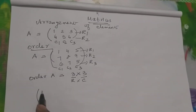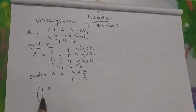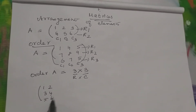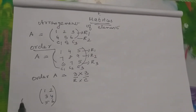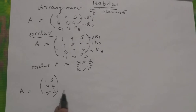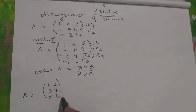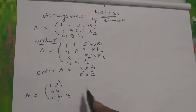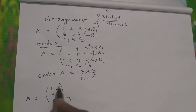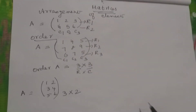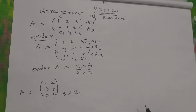For example, if you have: 1, 2, 3, 4, 5, 6 — what is the order of this matrix? 1, 2, 3 — that is 3 rows. 1, 2 — that is 2 columns. So it is a 3 by 2 matrix.